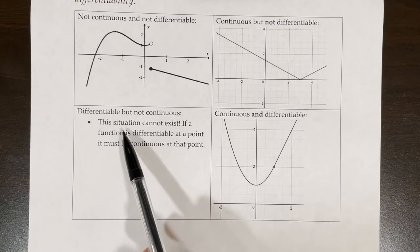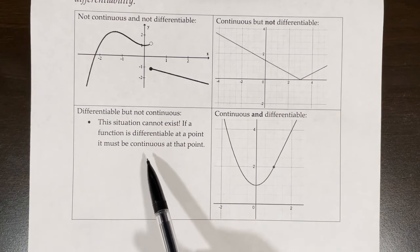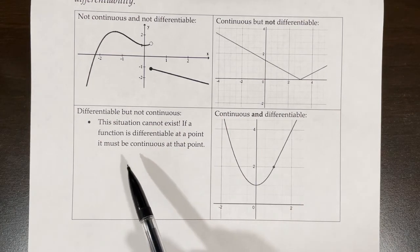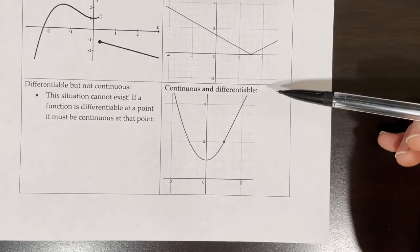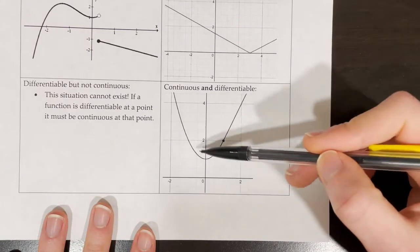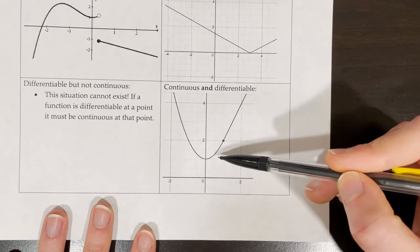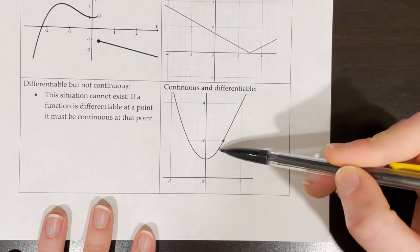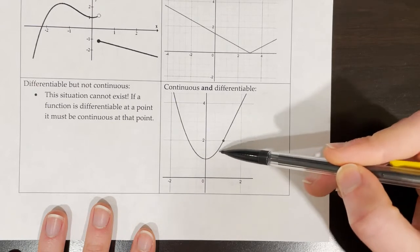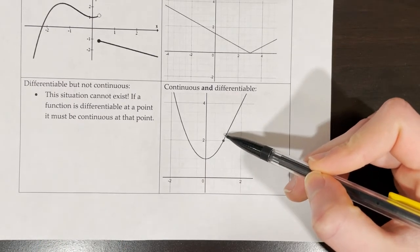For a function that is differentiable but not continuous, this is not a situation that can exist, because we know that if a function is differentiable at a point, then it must be continuous at that point — differentiability implies continuity. Here's a function that is both continuous and differentiable at the point x equals 1. It is continuous because the different parts of the piecewise function line up, and it's also differentiable because the slope of the tangent line on the left side is equal to the slope of the tangent line on the right side. We have a smooth pass-off from the quadratic to the linear function, so this one is differentiable and continuous at x equals 1.